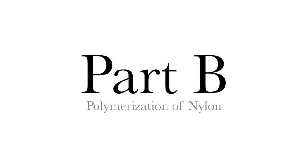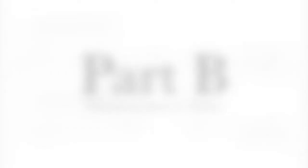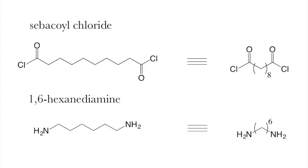Part B will be the synthesis of nylon. This is the same kind of nylon we use for stockings and for rope and a variety of other products. For this we have two chemicals we'll be using. Sebacoyl chloride, which has 10 carbons on it, and these highly electrophilic acyl groups.